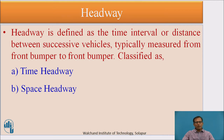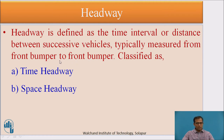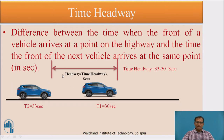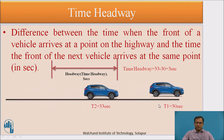Another important microscopic parameter is headway. Headway is defined as the time interval or distance between successive vehicles, measured bumper to bumper. It is classified into two types: time headway and space headway. Time headway is the difference in time when the front of successive vehicles pass a point. For example, if the first vehicle is recorded at 30 seconds and the second at 33 seconds, the time headway is 33 − 30 = 3 seconds.